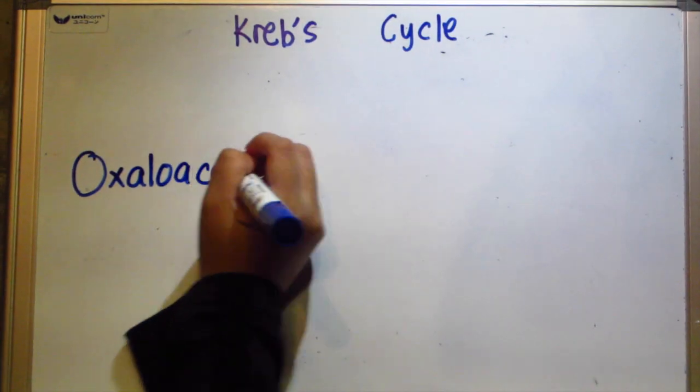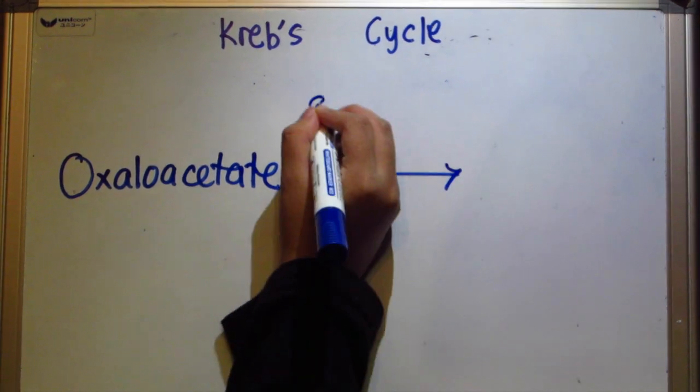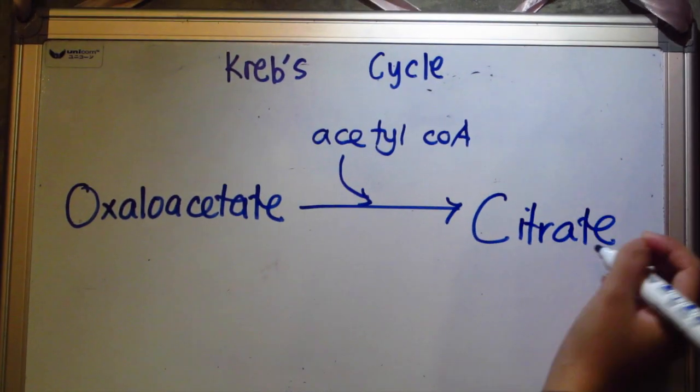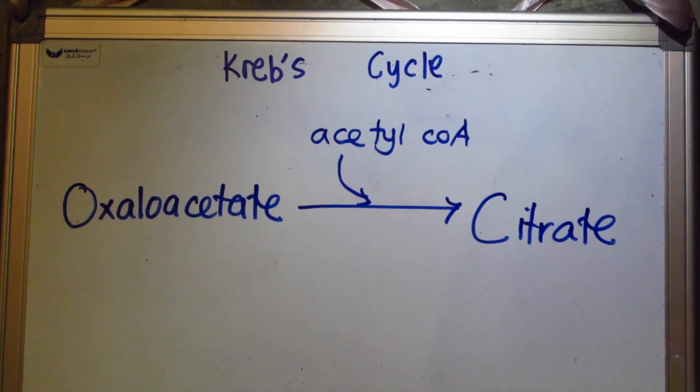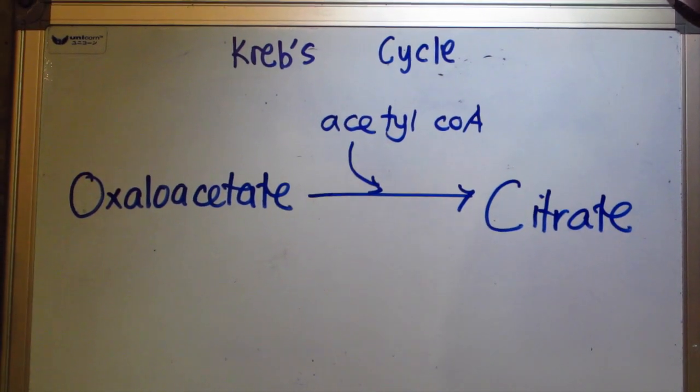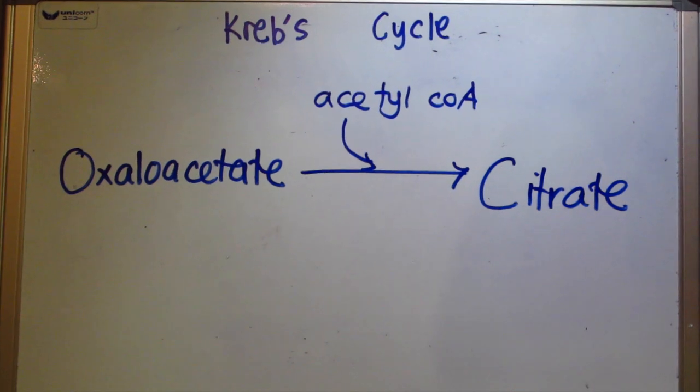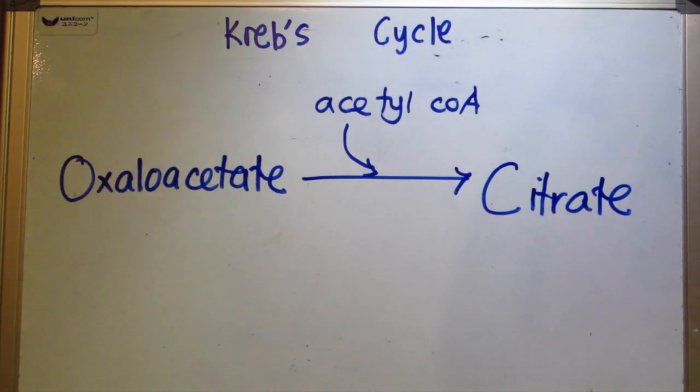Step 1, condensation. The cycle starts with the breaking of the unstable bond attaching the acetyl group to coenzyme A. The acetyl group then combines with a 4-carbon molecule called oxaloacetate to form a 6-carbon compound citric acid or citrate. The coenzyme A is then free to combine with another acetyl group from pyruvate and repeat the process.